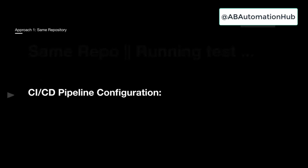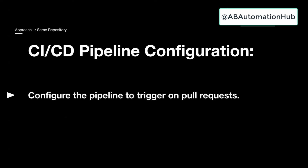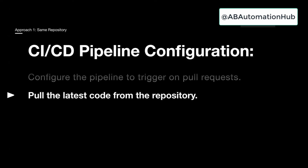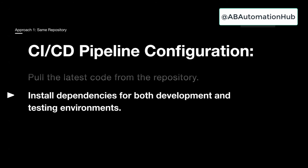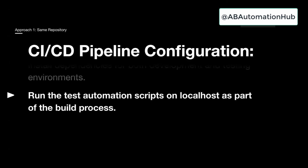When we talk about the workflow pipeline configuration, you can configure your pipeline to trigger whenever any pull request is opened. You take the latest code from the repository and install all the dependencies for both development and testing environments. Taking Cypress as an example running on GitHub Actions, you need to add all those actions before running your test script.